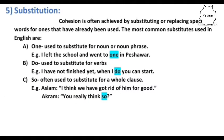The fifth formal link is called substitution. Cohesion is often achieved by substituting or replacing special words for ones that have already been used. The most common substitutes in English are: first, 'one,' used to substitute for a noun or noun phrase; second, 'do,' used to substitute for verbs; and third, 'so,' used to substitute for a whole clause. An example of 'one': 'I left the school and went to the one in Peshawar' — here 'one' replaces the word 'school.'